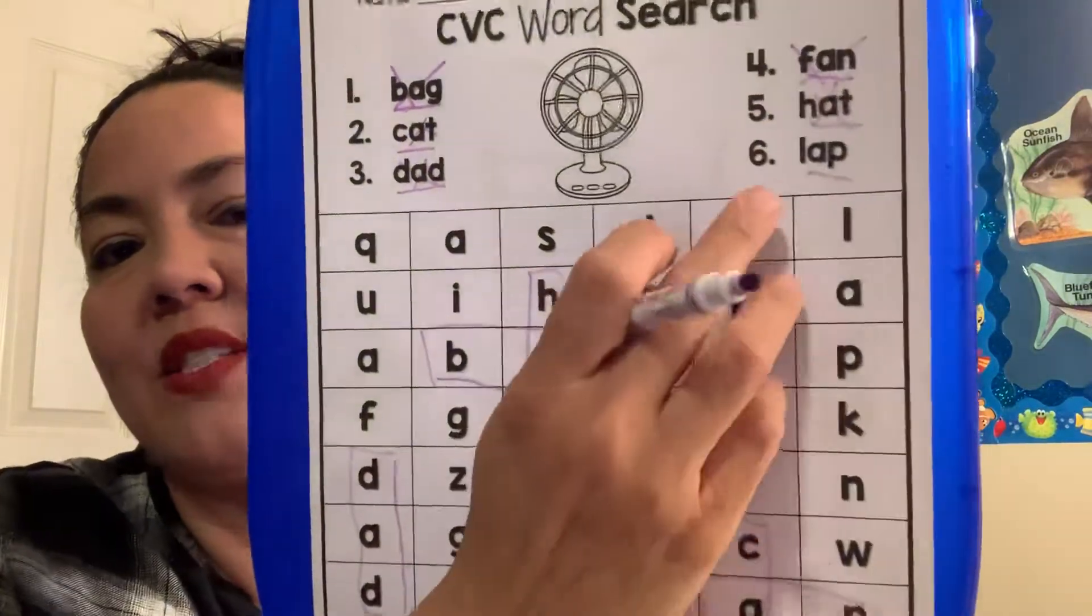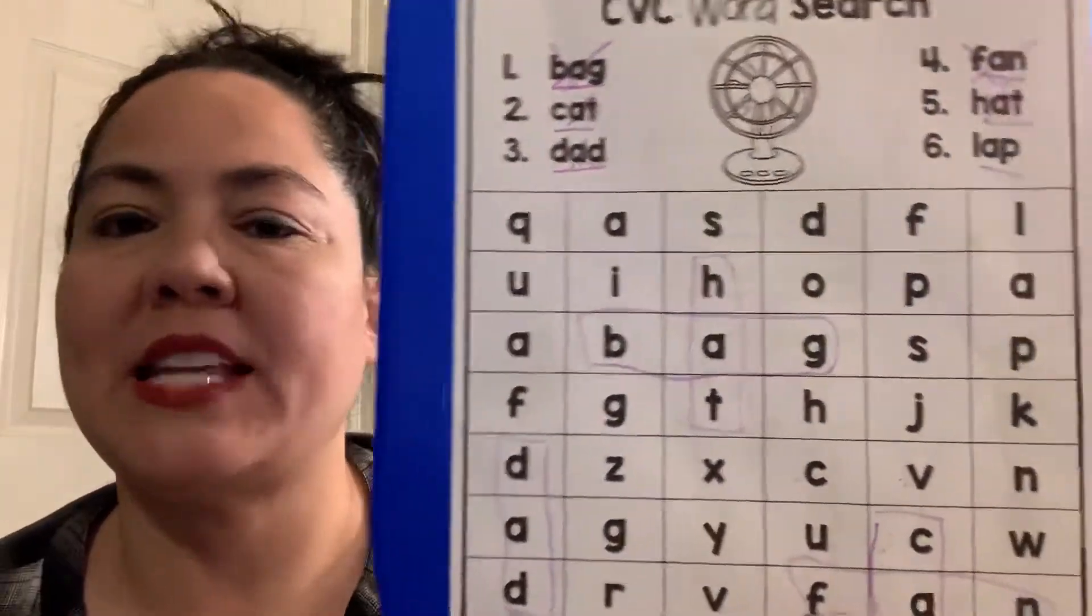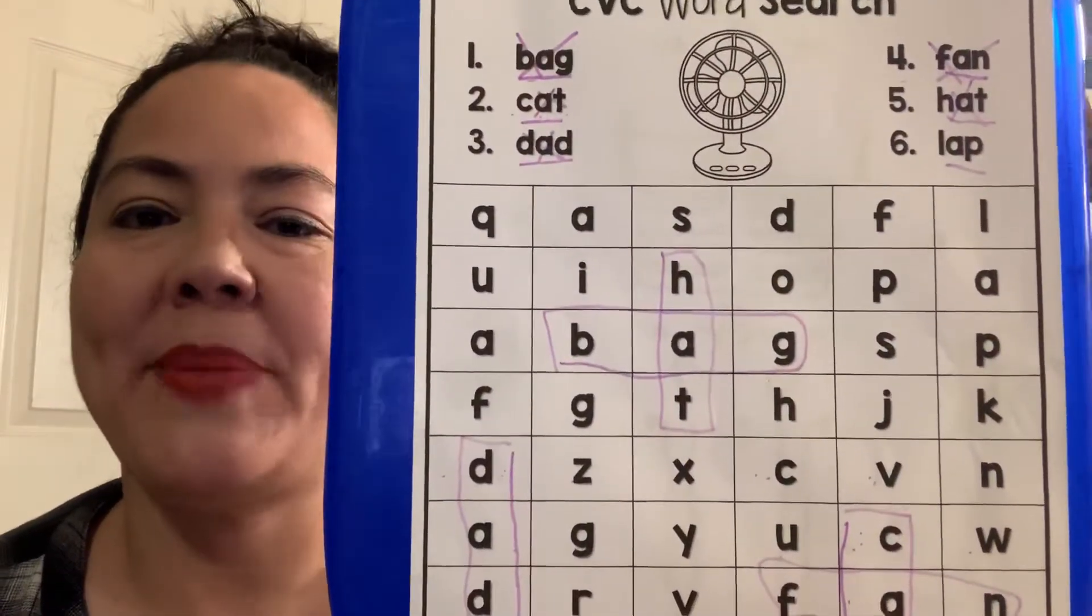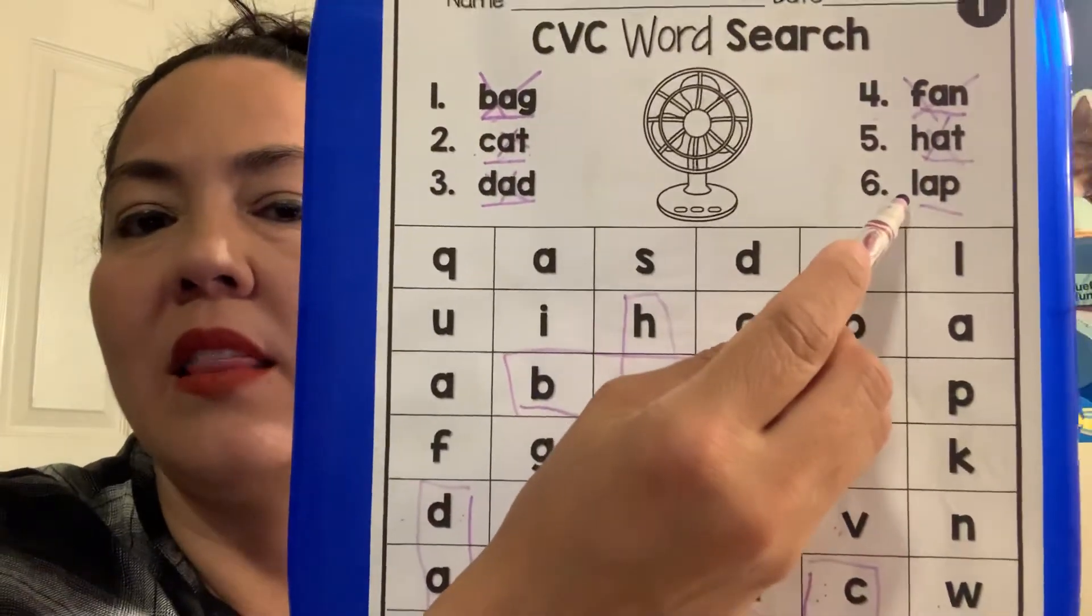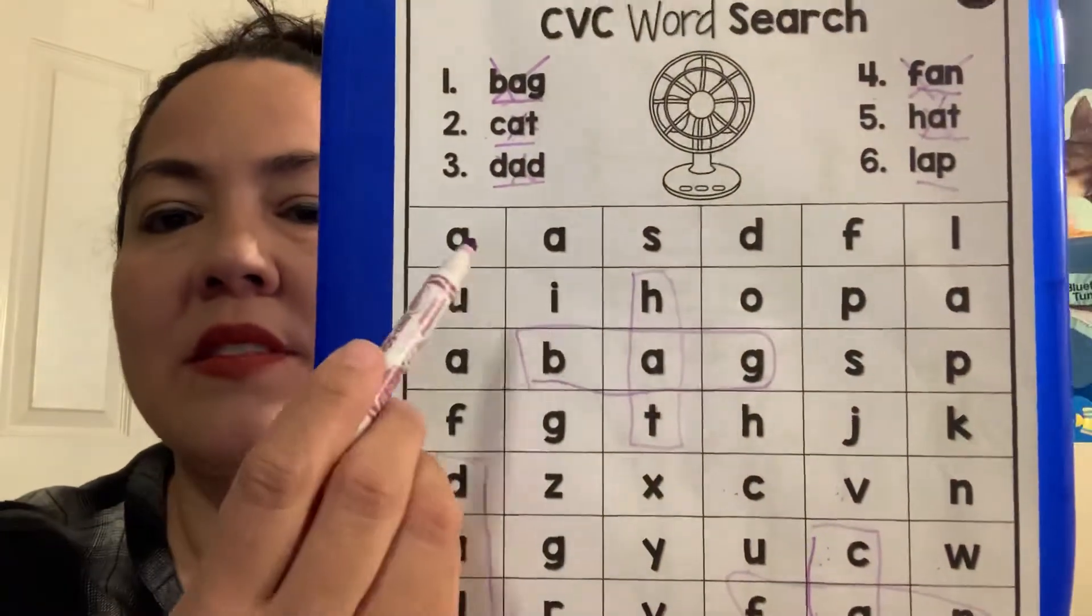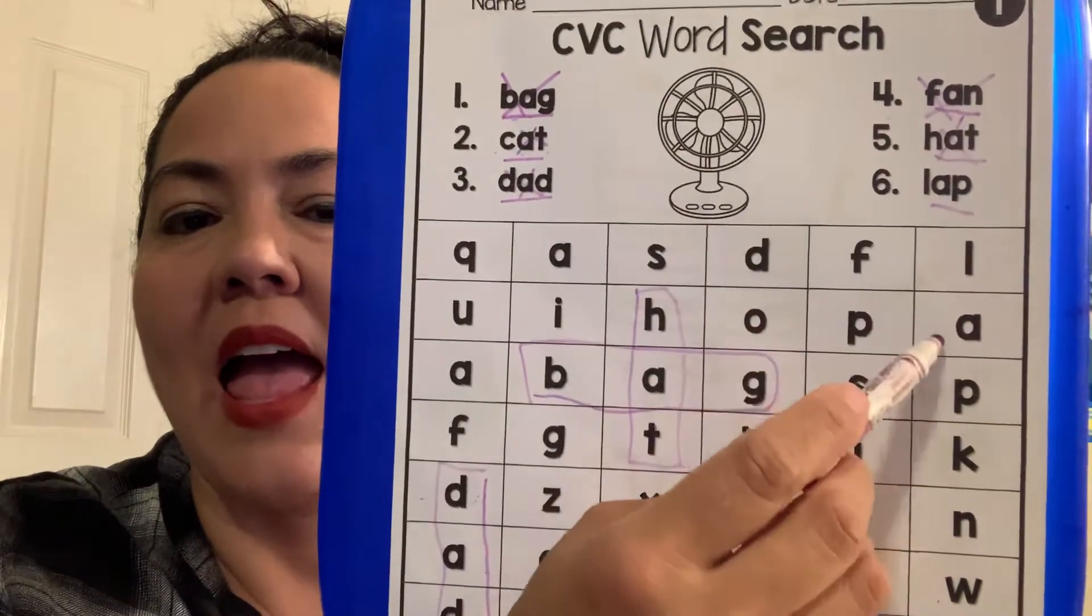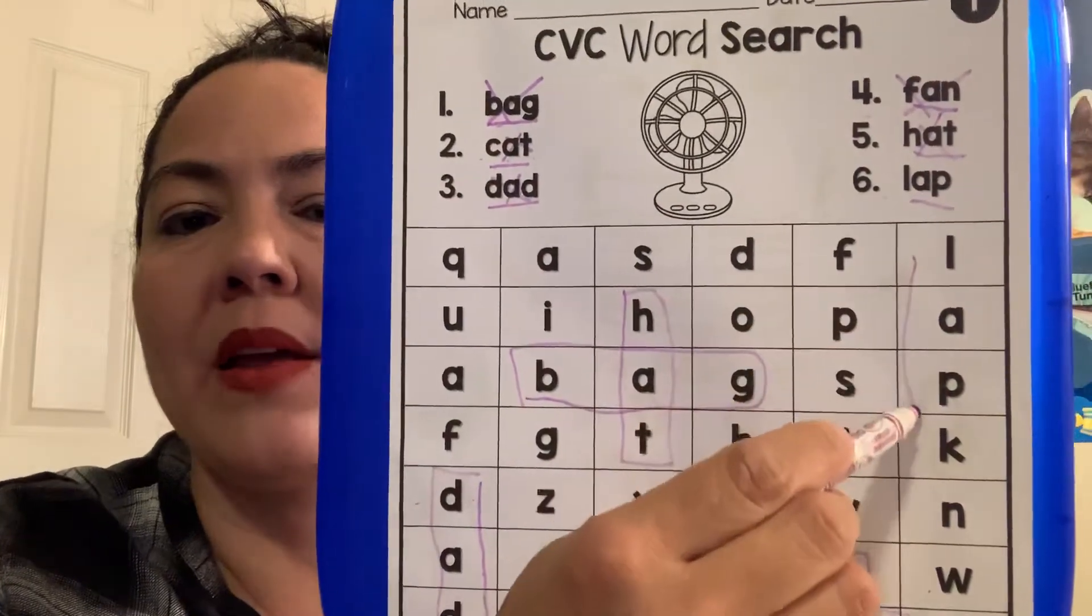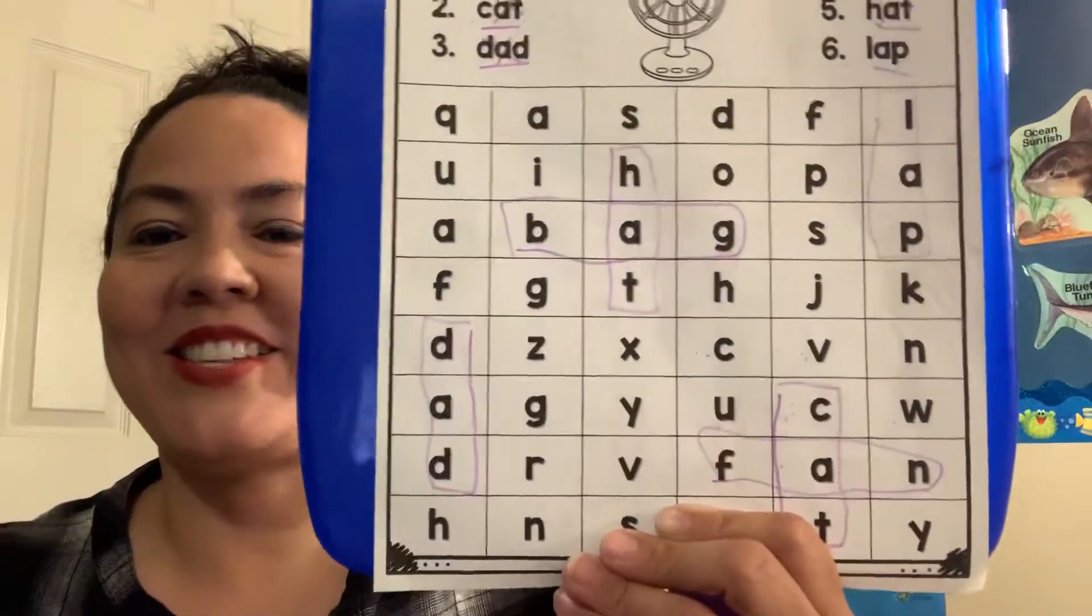Then our last word is l-a-p. Lap. Sometimes you sit on your mom or dad's lap and give him a great big hug. Lap starts with l. L-a-p. So let's find our l's. Can we find any l's? I found one right here. L-a-p. I think I found it. Good job, guys. All right. I hope you had fun doing that worksheet. That was a fun one.